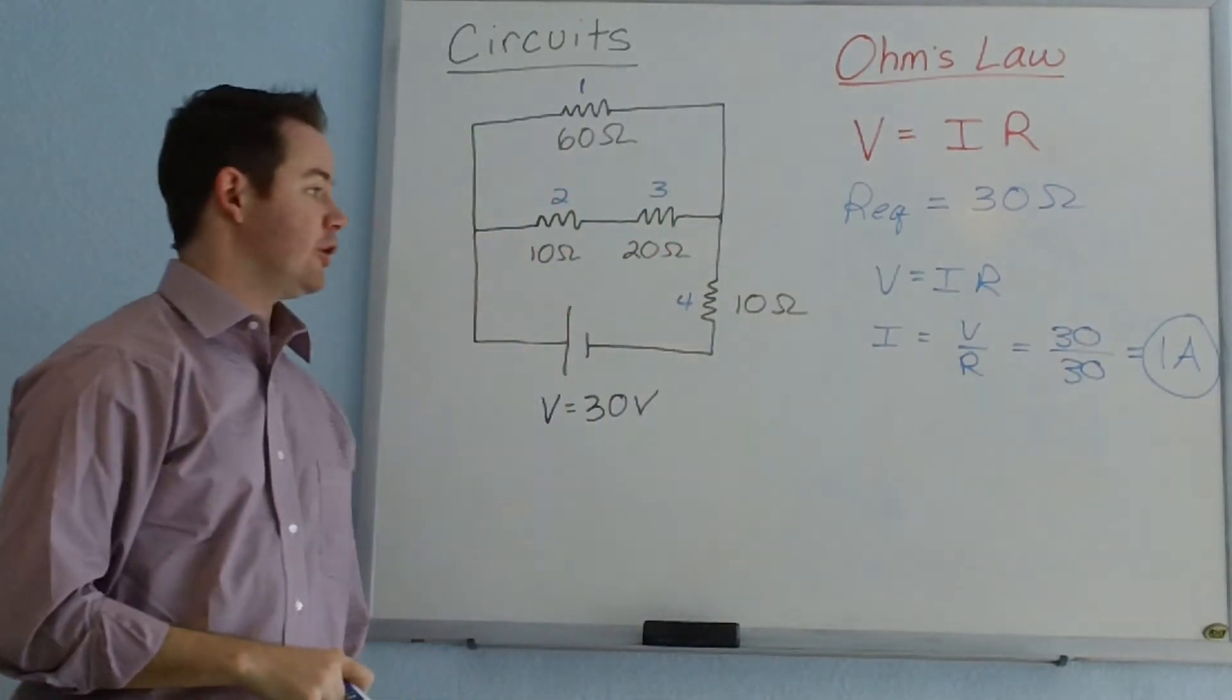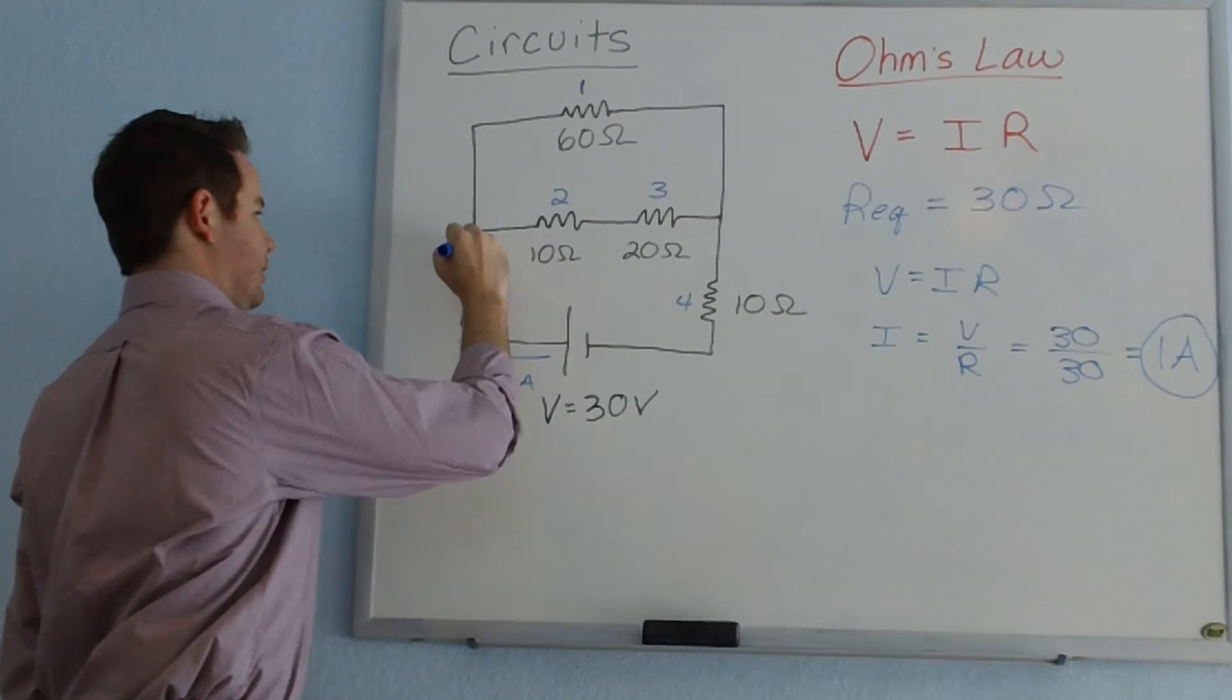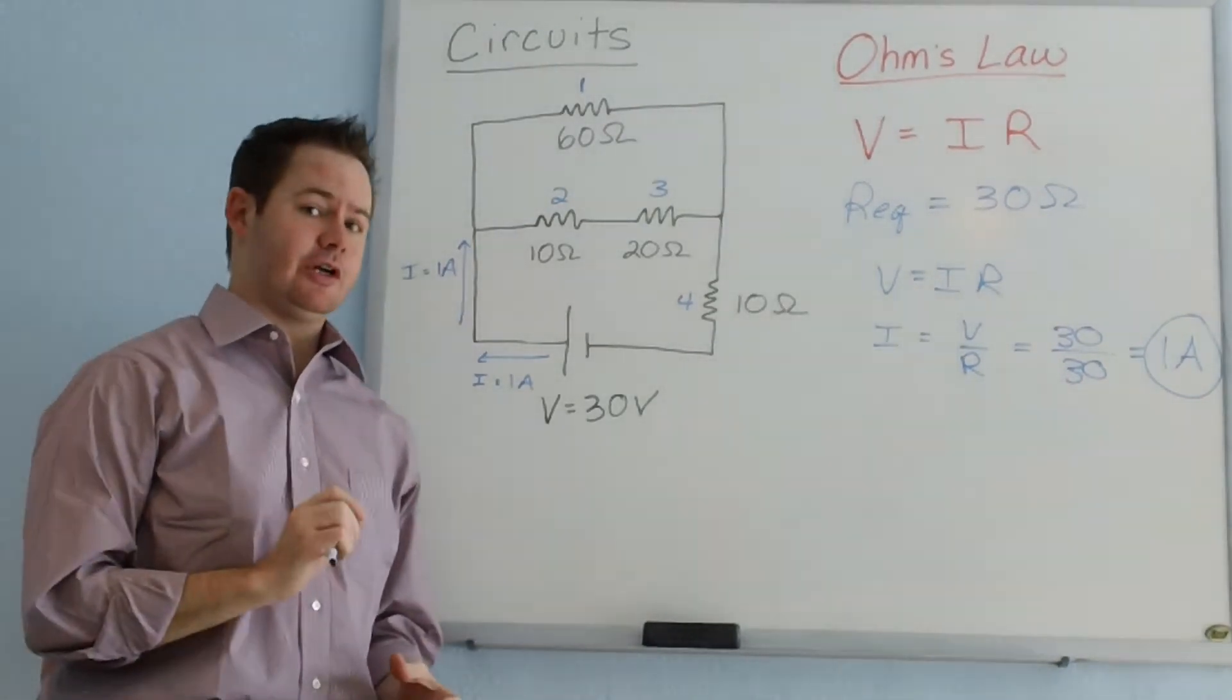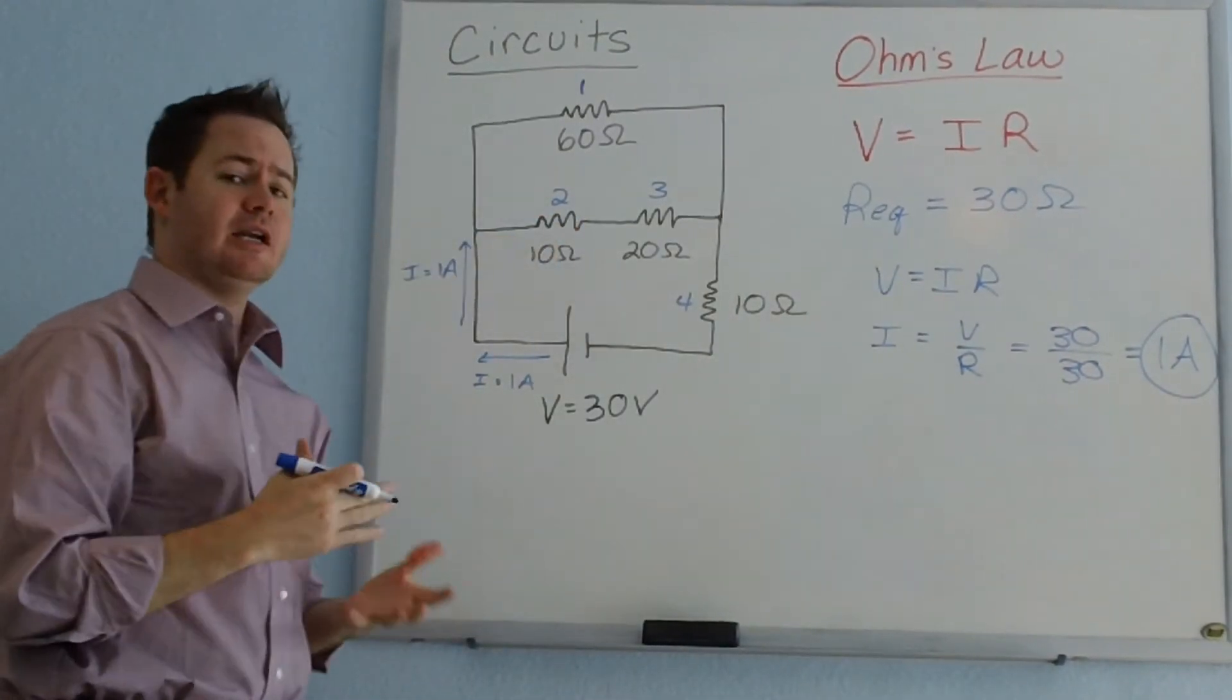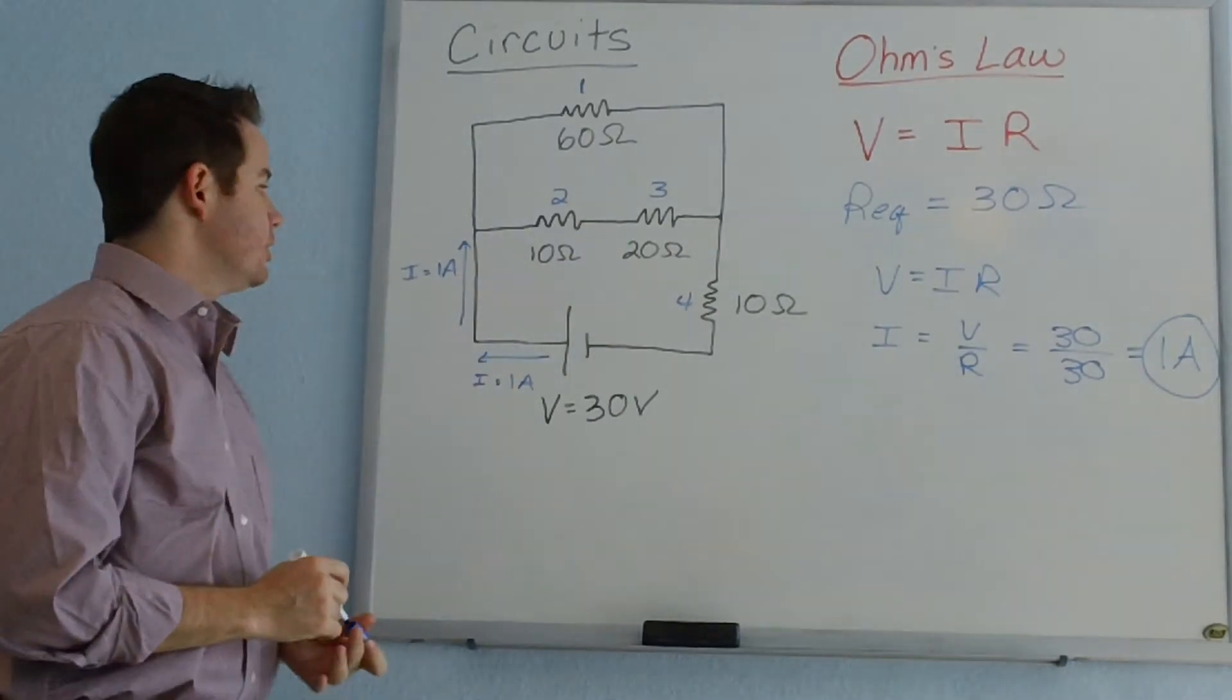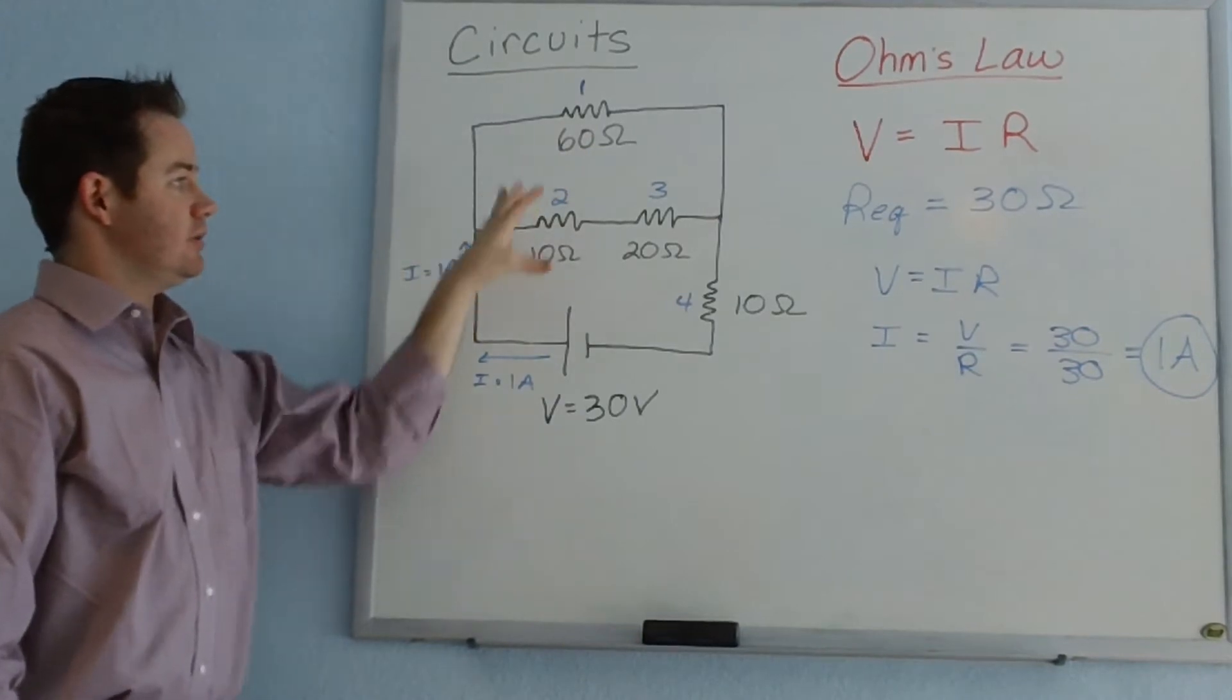A 1 ampere current is what we have flowing out of our voltage source here and heading up into this first intersection that we see here. Now an important thing to appreciate about current is that whenever you reach a junction, your current will divide, although not necessarily evenly. It doesn't always split in half, but it will divide according to the resistances of each loop of your circuit. So right now we know that the current flowing out of our voltage source is 1 amp, and we want to figure out how that current is going to be divided up into these two branches of our loop.